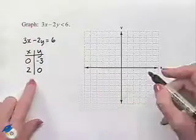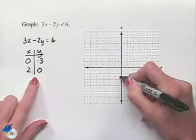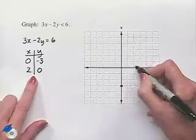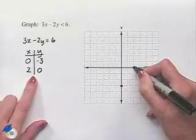So now let's plot these two points. 0, negative 3 would be three units down on the y axis. 2 comma 0 will be two units to the right on the x axis.